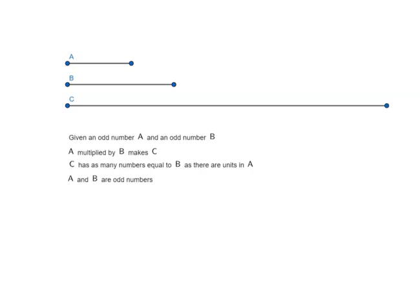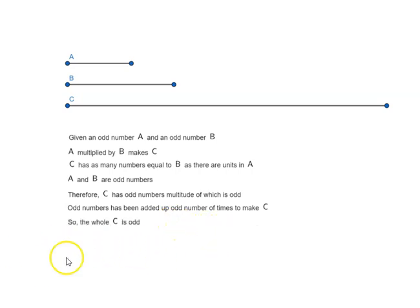A and B are odd numbers. Therefore, C has odd numbers, multitude of which is odd. Which means odd numbers have been added up odd number of times to make C. And we have already seen that if odd number is added to odd number, we get an odd number. So the whole C is odd.